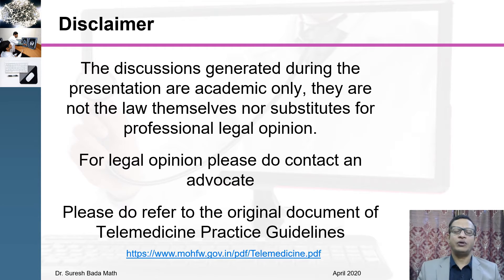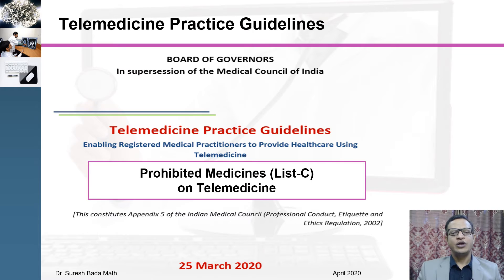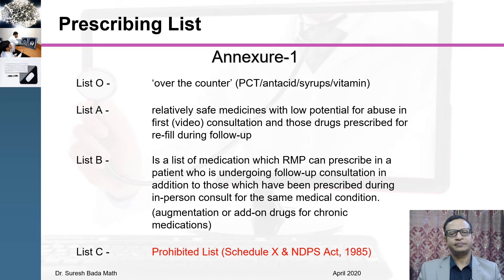I also request you to go through the original document of the Telemedicine Practice Guideline and look at the Ministry of Health and Family Welfare and MCI website for any amendments to this guideline. Today we will be discussing which medicines are prohibited under telemedicine — basically which medicines you cannot prescribe online. The prescribing list has been divided into four types: List O, List A, List B, and List C.